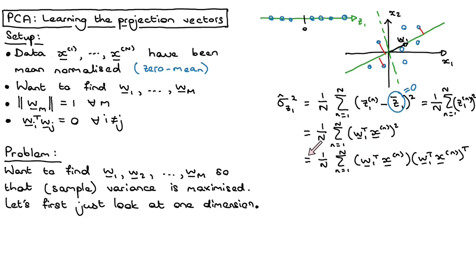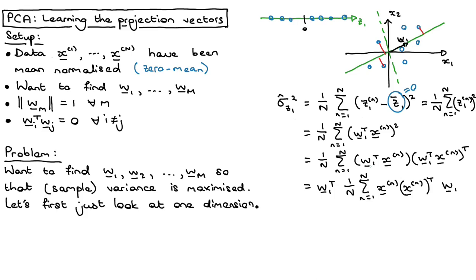What I will do is take this W1 and move it out. Keeping 1 over N and the sum, I keep XN and get XN transpose after flipping, and then W1 on the right — because taking the transpose of the transpose gives back the original. I can take W1 out because it doesn't depend on little n; it's the same for all terms being summed. Similarly, the other W1 can be multiplied after the summation, so we put brackets around the middle part.